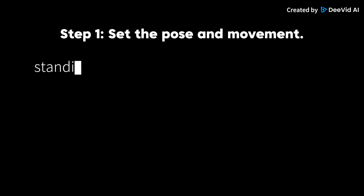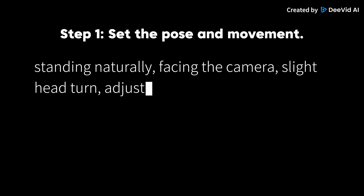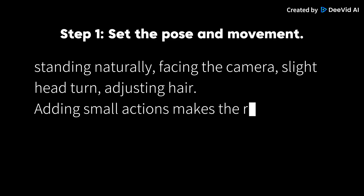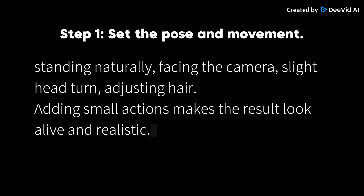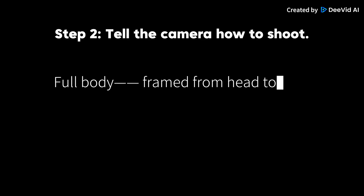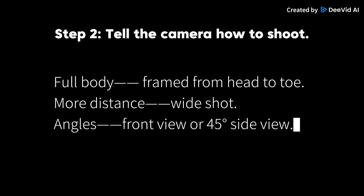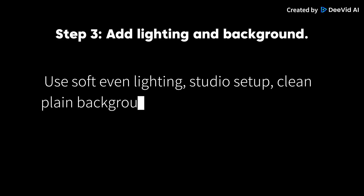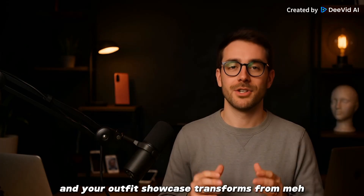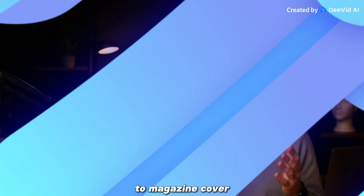Step 1: set the pose and movement. Try things like standing naturally, facing the camera, slight head turn, adjusting hair. Adding small actions makes the result look alive and realistic. Step 2: tell the camera how to shoot. Want the full body? Say 'frame from head to toe.' Want a bit more distance? Say 'wide shot.' You can even specify angles like front view or 45-degree side view. Step 3: add lighting and background. Use soft even lighting, studio setup, clean plain background to instantly make it look professional. Just three steps and your outfit showcase transforms from meh to magazine cover.